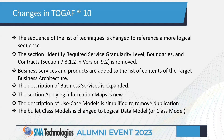The sequence of the list of techniques is changed to reference a more logical sequence. The section on required service granularity level boundaries and contracts has been removed. Business services and products have been added to the list of contents of the target business architecture — products were not there before, so that has been added. The description of business services is expanded, information maps are added, and the description of use case models is simplified to remove duplication. The bullet class model is changed to logical data model or class model.